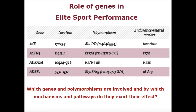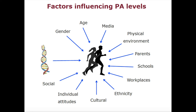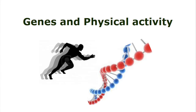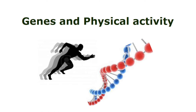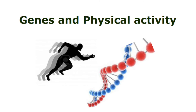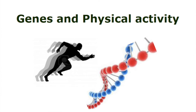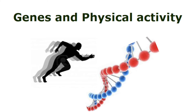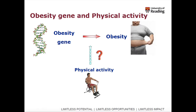There are various factors affecting physical activity levels: social, individual attitudes, cultural, ethnic, workplace, schools, parents, physical environment, media — which plays a very important role — age, and gender. But besides all these factors, there is another important factor: the genetic factor. The way we perform in sports activities or even day-to-day activities — some people prefer to climb stairs and some prefer to take a lift. That is all being controlled in your genes. Even that little bit of thought is being controlled by your genes and genetic variation.